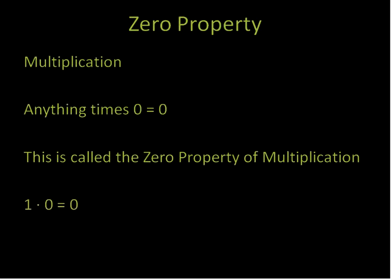So 1 times 0 is 0. 140 times 0 is 0. A times 0 is 0. A, B, C, D times 0 is 0. Again, you can do it with negative numbers, positive numbers, fractions. Anything times 0 is 0. And that is the 0 property.